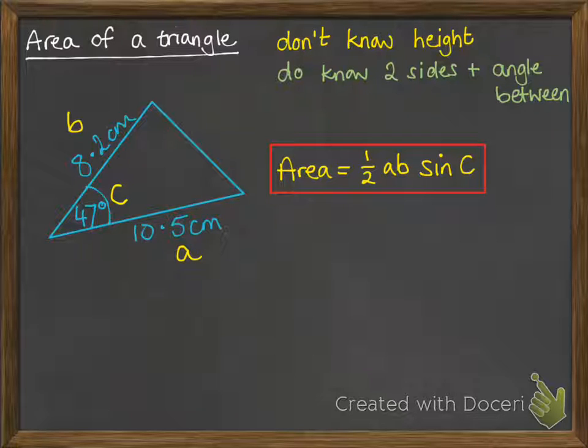We don't label it as angle A as we have done with other things, because we're not trying to find it out. We know that one. We always leave A as the thing we're trying to work out. In this case, A is area.